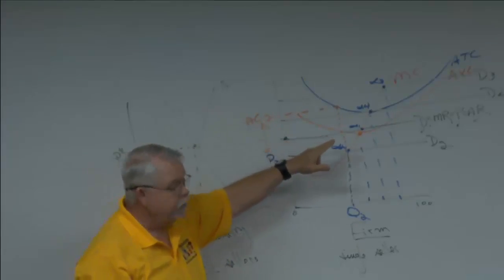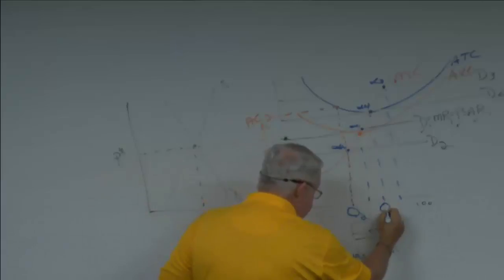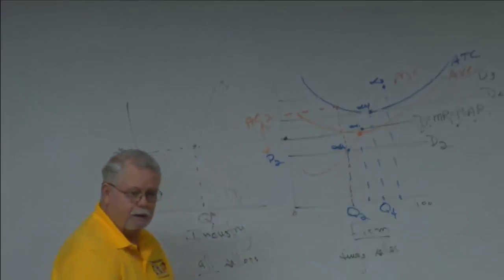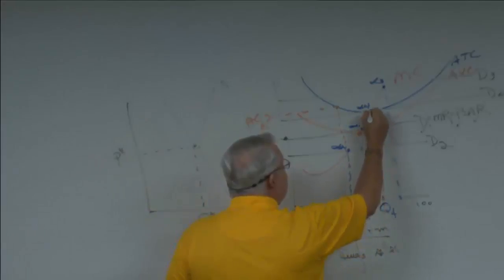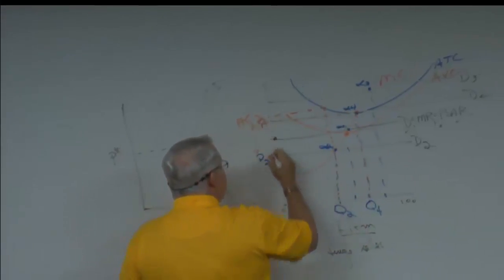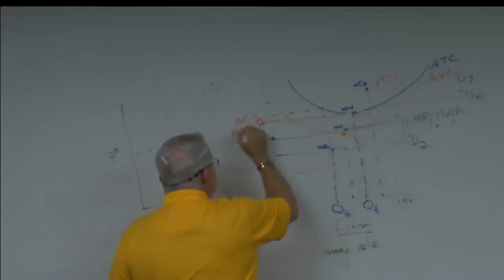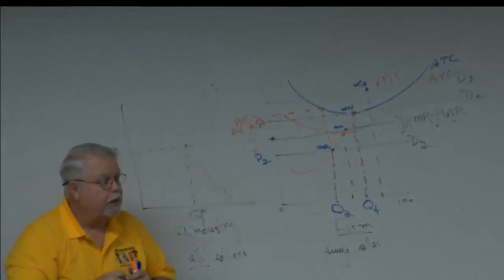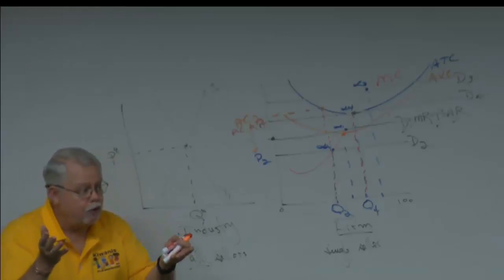What's going on at D4? Find alpha 4, read down to Q4. Read up to price 4 — and read up to average cost. They're right here — price equals average cost. What's going on with that company? Zero economic profit, positive accounting profit. It's called break-even.